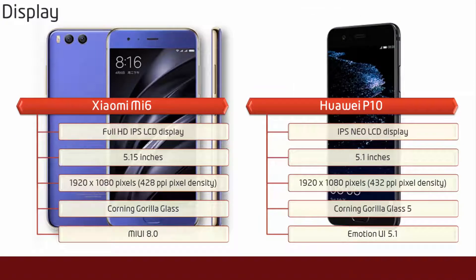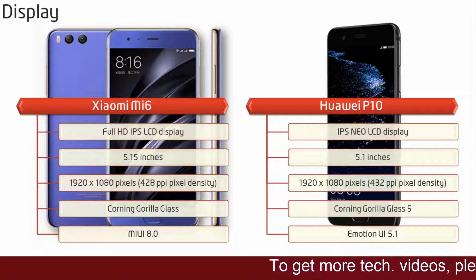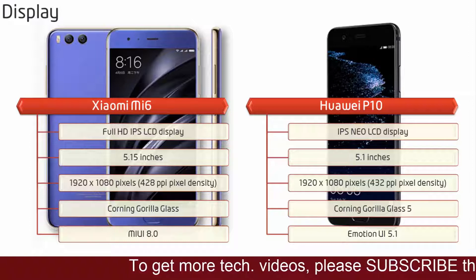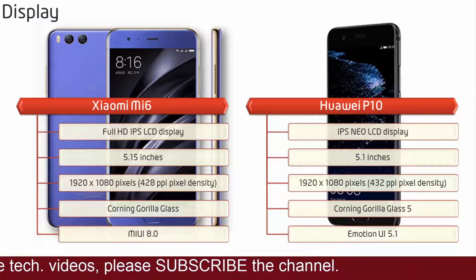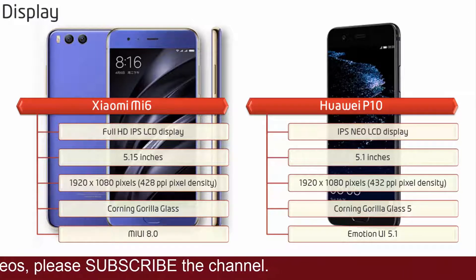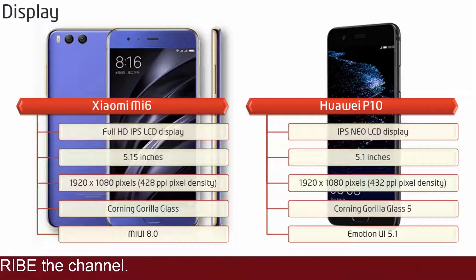Moving on to the display, the Mi 6 is a 5.15 inch device with a Full HD IPS LCD display having 1920 by 1080 pixels with 428 ppi pixel density. Xiaomi Mi 6 comes with Corning Gorilla Glass with the MIUI 8.0 interface.